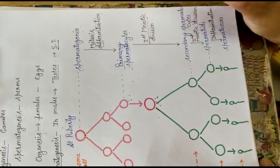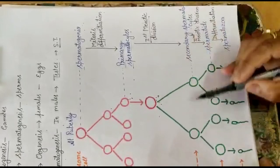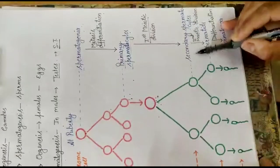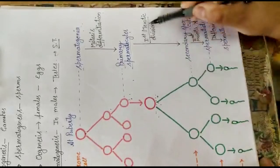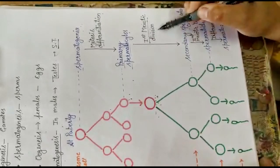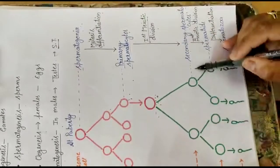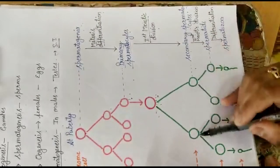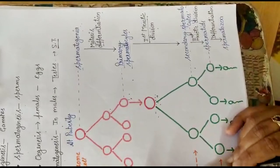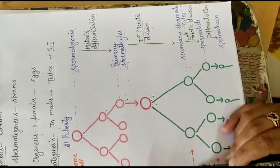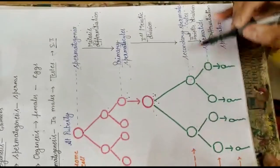The primary spermatocyte is also diploid. It then undergoes the first meiotic division, forming two secondary spermatocytes. You can see here that the primary spermatocyte divides by the first meiotic division to form two secondary spermatocytes. These secondary spermatocytes are haploid, meaning they have 23 chromosomes.